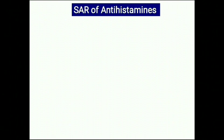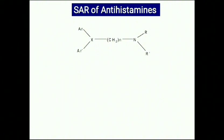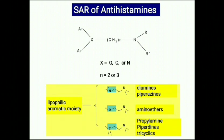Continuing our topic of structural activity relationships of antihistamines, we will now focus on the major skeleton of antihistaminics — what are the different groups required for antihistaminic activity, whether those groups are essential or non-essential. The basic skeleton has an atom X to which two aryl groups are attached, a spacer atom of a few carbons, and a terminal amino group.